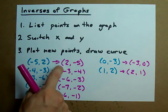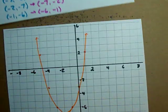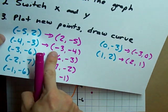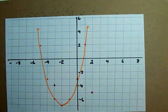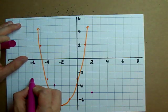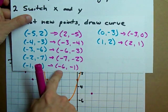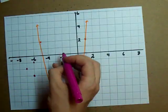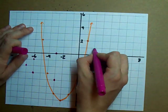Then plot each of these new points on your graph. We need one at (2, -5), one at (-3, -4), one at (-6, -3), one at (-7, -2), one at (-6, -1), one at (-3, 0), and one at (2, 1).